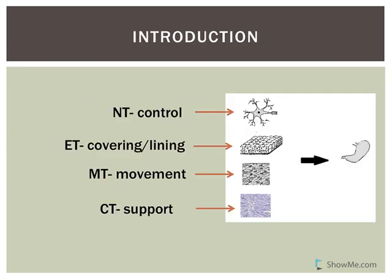Looking at the four tissue types: NT stands for nervous tissue — it's specifically about control, controlling things like muscles and glands or secretions, and it's involved in interpretation of information. Epithelial tissues are our covers and linings — they line body organs and cover our body, designed for protection, secretion, and absorption. Muscle tissue has three different types and is designed to contract for movement. Connective tissues are the most abundant of all tissues with a multitude of functions — they connect, support, and much more.